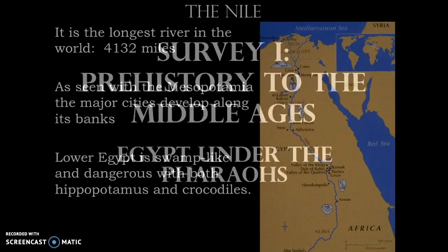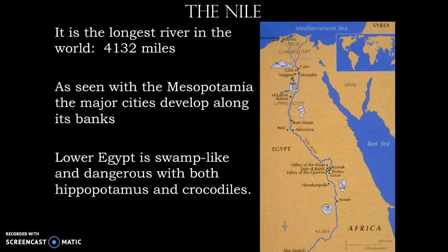Greetings everybody. Today we're going to be talking about ancient Egypt. And of course with Egypt we need to talk about the Nile. It's the longest river in the world, measuring 4,132 miles. The Nile is important because this is the water source for this rather arid area of the world. And just like we saw in Mesopotamia, this is where the development of major cities is going to be. In Mesopotamia we saw the Tigris and Euphrates River, and now we've got the Nile.